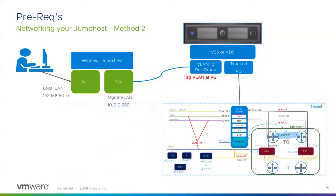The next method is setting up another port group and doing VLAN tagging on that port group itself. So we've got the trunked port group for the Cloud Builder appliance and then another VLAN port group for VLAN 10. The VSS or distributed switch will tag it and get traffic speaking to the SDDC manager, vCenter, or whatever you're trying to reach. This is one of the methods I use in my environment — I use VLAN tagging on the port group rather than inside Windows.